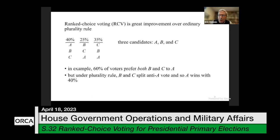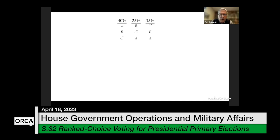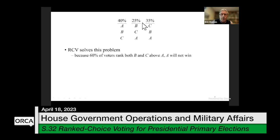Nevertheless, if we use ordinary plurality rule — the standard voting method in the United States — A is going to win because A will have 40% of the vote, beating 25% and 35%. What is going wrong is that even though B and C are more popular than A, they split the vote between them, so neither wins. Ranked choice voting solves this problem. Voters get to rank the candidates; they can do more than just express their preference for a favorite. Because 60% rank B and C above A, that ensures A will not win — one of B or C will win, which from a democratic perspective is the right outcome.